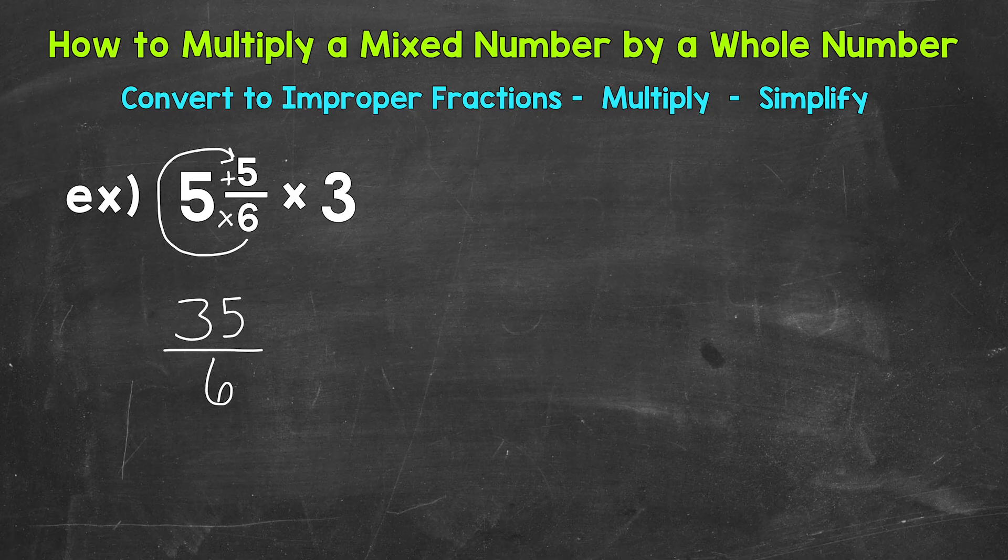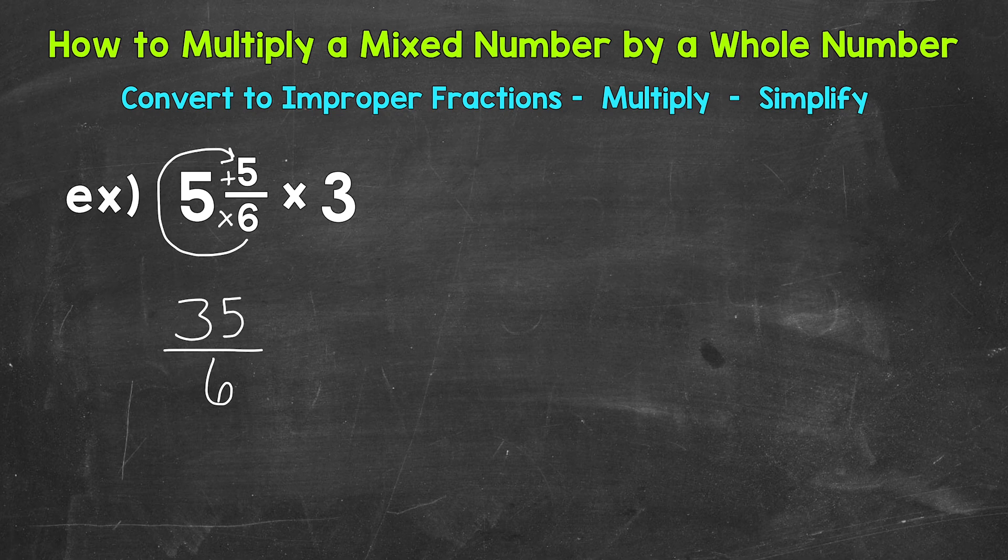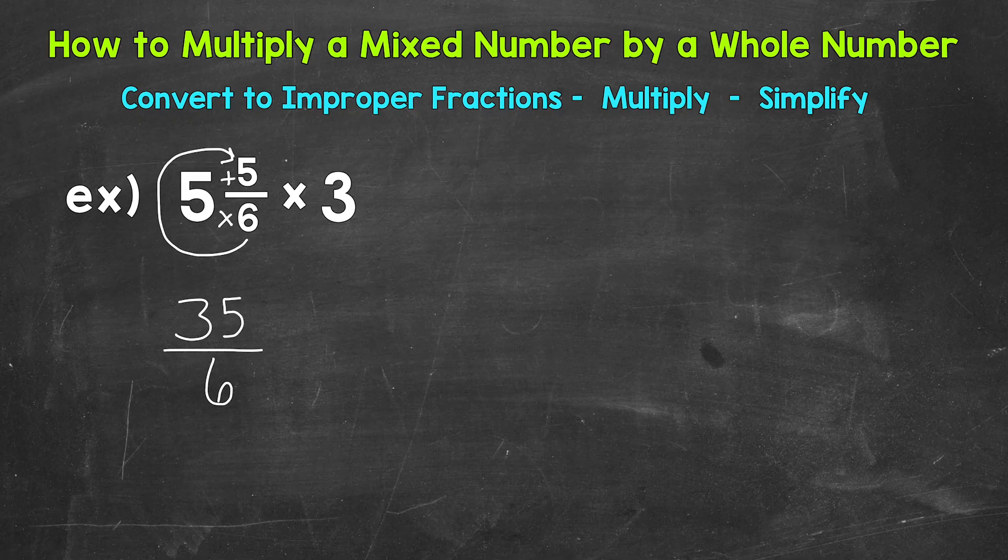Now that improper fraction is equivalent to the mixed number. We just converted it to an improper fraction, so we're not changing the value of the problem at all. Now we need to write our 3 as a fraction, so put it into fractional form. All we need to do to put a whole number in fractional form is put it over 1. We want an improper fraction and the whole number to be in fractional form so all we have is a top and a bottom. That way we can multiply straight across.